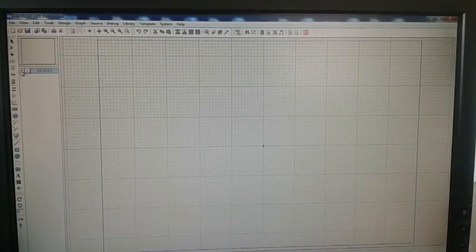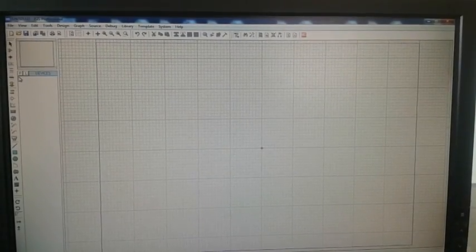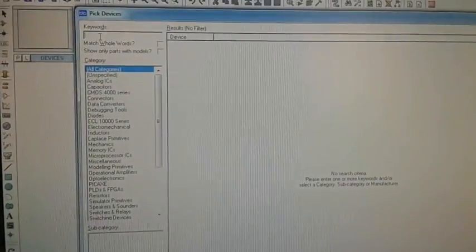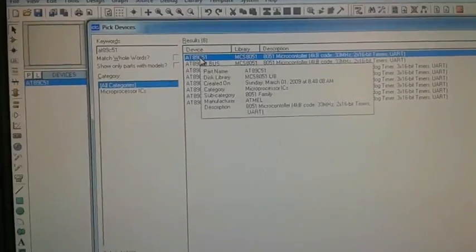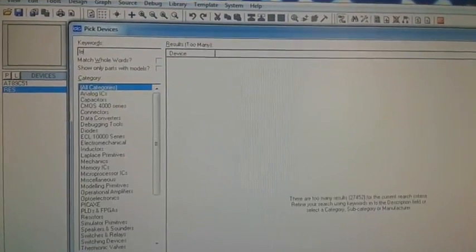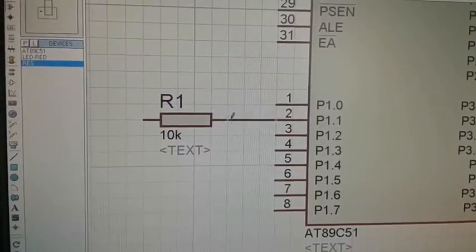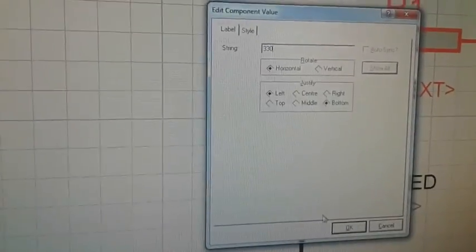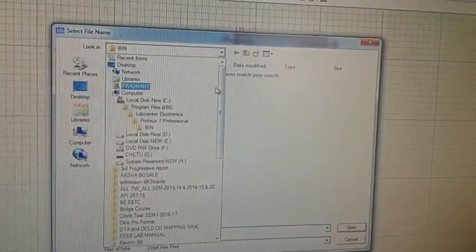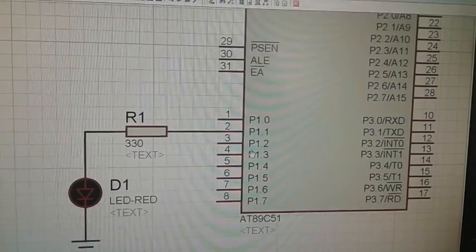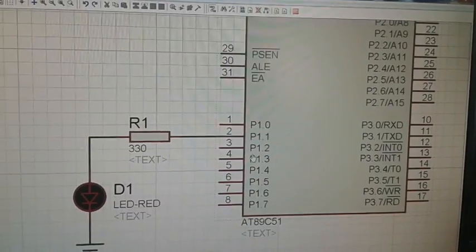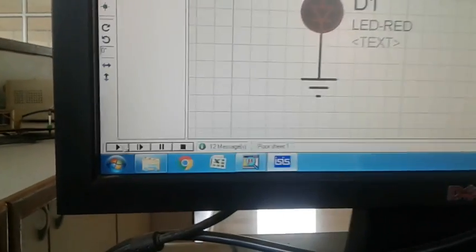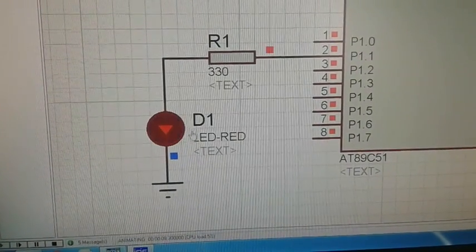Now let's proceed towards the interfacing in Proteus software. Minimize this Keil software. Now in Proteus software, pick the required components from the list and interface them according to our interfacing diagram. After completing the all interfacing and burning the program in the IC, click on the play button and now check the output, LED is blinking.